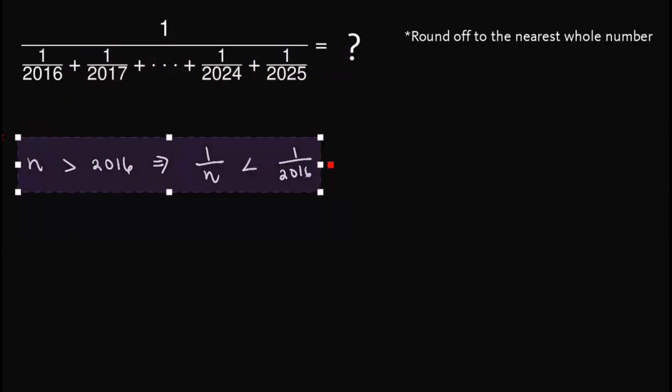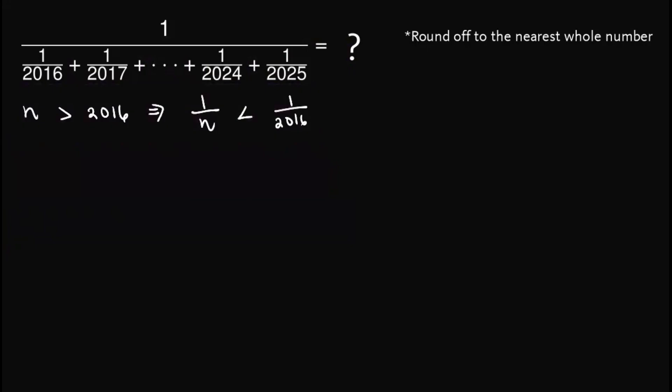With that in mind, we know that 1 over 2017 plus 1 over 2018 up until 1 over 2024, plus 1 over 2025, is less than 1 over 2016 plus until 1 over 2016. Now, the problem is how many of this one?